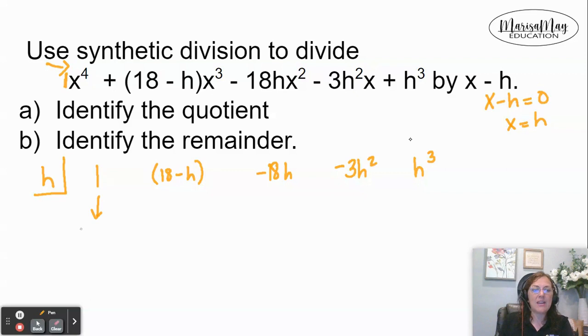So now we begin the synthetic division process by bringing down the 1. We multiply. h times 1 is h. Now we add. 18 minus h plus h gives us 18.